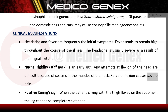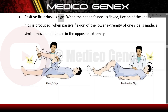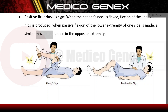Forceful flexion causes severe pain. Positive Kernig's sign: when the patient is lying with the thigh flexed on the abdomen, the leg cannot be completely extended. Positive Brudzinski's sign: when the patient's neck is flexed, flexion of the knees and hips is produced; when passive flexion of the lower extremity of one side is made, a similar movement is seen in the opposite extremity.